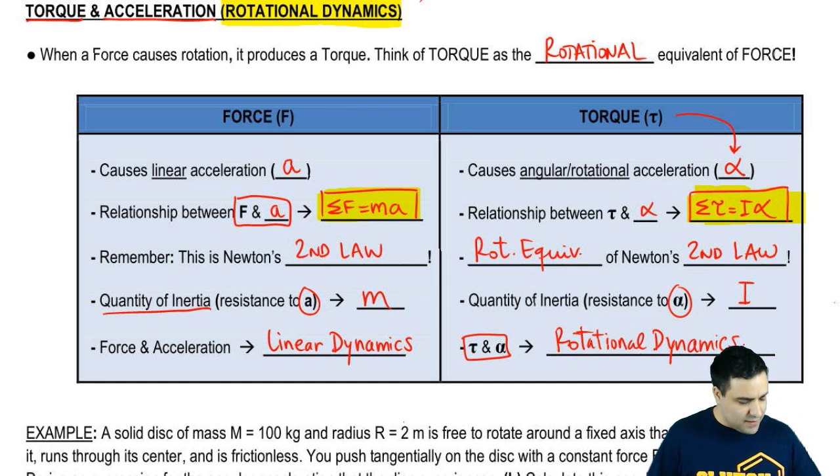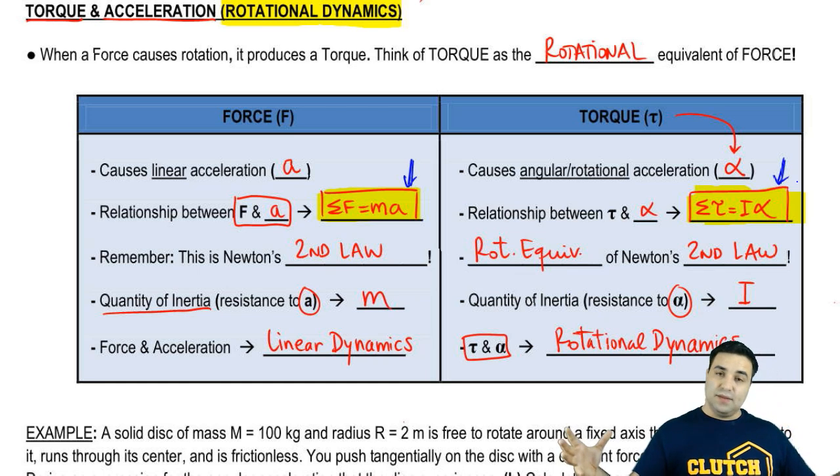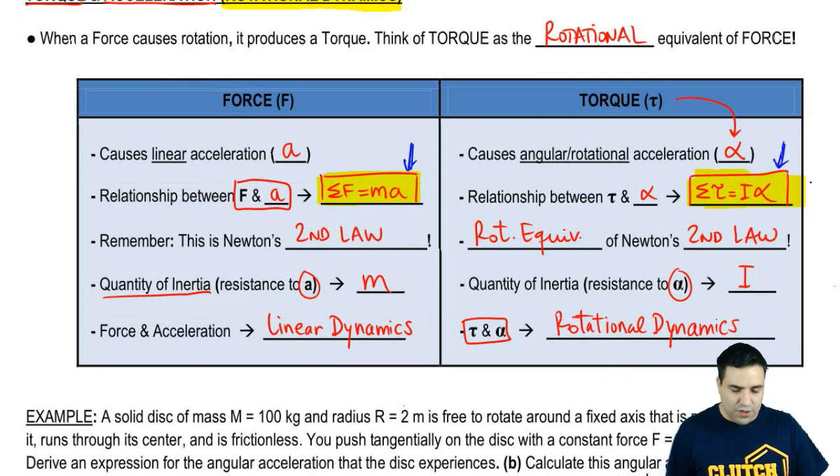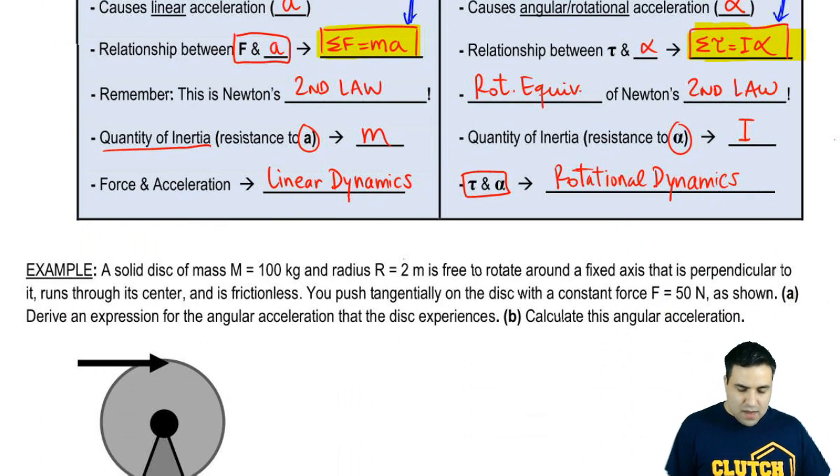So that's the difference. So basically, you might remember doing a bunch of F equals MA. Now you're going to do a bunch of torque equals I alpha. And in fact, in some cases, you're going to do two of them combined. So let's do an example here, see how this stuff works.